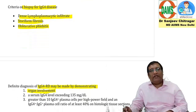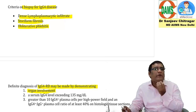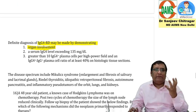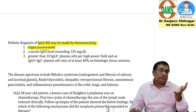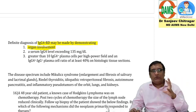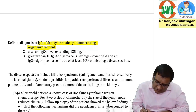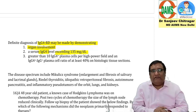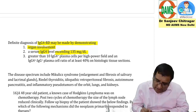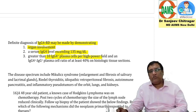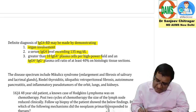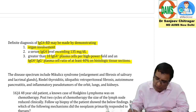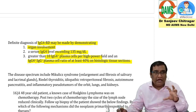Definitive diagnosis requires at least one organ involvement — commonly thyroid, retroperitoneal fibrosis, kidney, pancreatitis, or inflammatory pseudotumors of orbit, lungs, and kidneys. Second criteria: serum IgG4 level should exceed 135. Third: greater than 10 IgG4 plasma cells per high power field, or IgG4 to IgG plasma cell ratio of at least 40 percent.